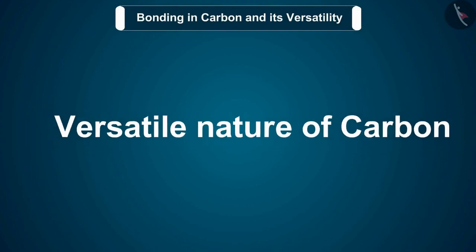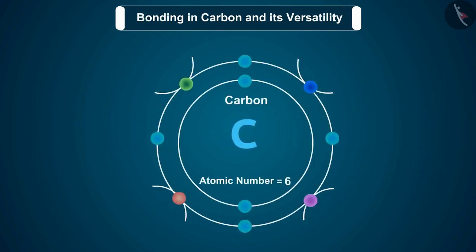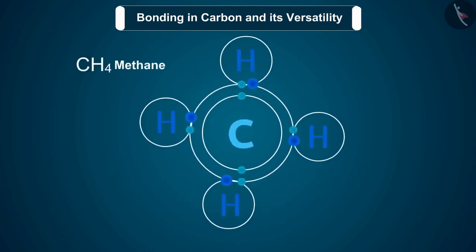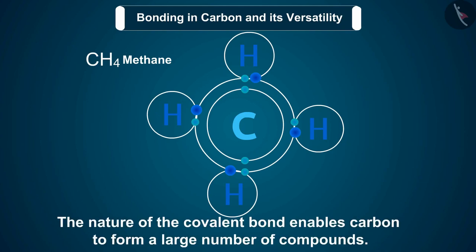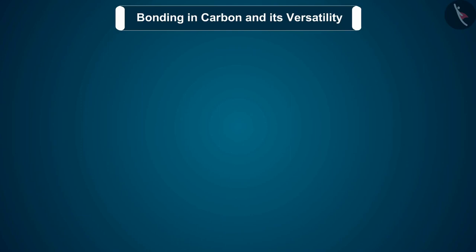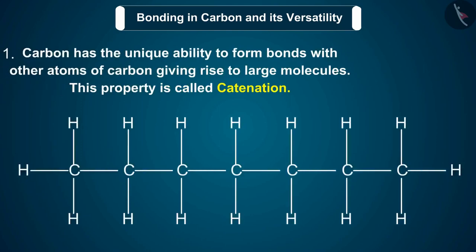Let us now discuss the versatile nature of carbon. We have seen the formation of covalent bonds by the sharing of electrons in various elements and compounds. We also know the structure of simple carbon compounds and how many things we use contain carbon. The nature of the covalent bond enables carbon to form a large number of compounds. Carbon has the unique ability to form bonds with other atoms of carbon, giving rise to large molecules. This property is called catenation.